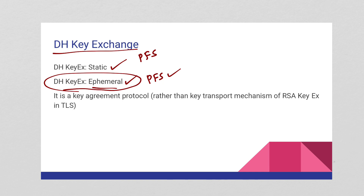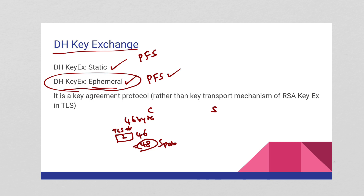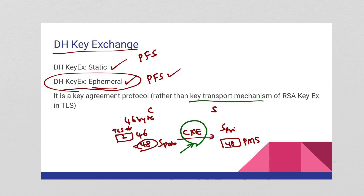Unlike RSA, which is a key transport mechanism — in RSA the client generates a 46-byte random number, prepends it with the 2-byte TLS version number to make 48 bytes, encrypts this using the server's public key, and sends it in the client key exchange message. The server uses its private key to decrypt and retrieve the 48 bytes. This 48-byte value in RSA is called the pre-master secret. So with RSA, the key is literally being transported over the wire in encrypted format inside the client key exchange message — that's why we call it a key transport mechanism.